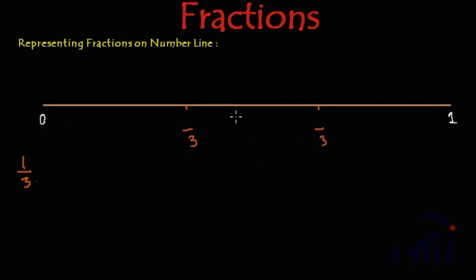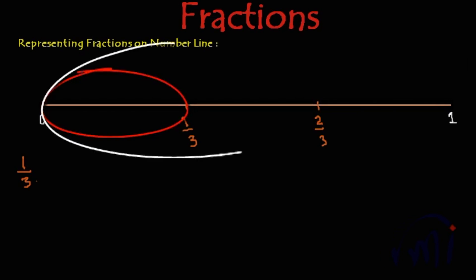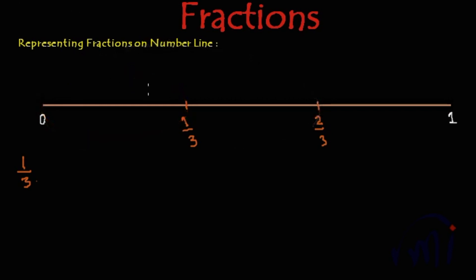After 0 we get 1, so this point will be 1 by 3. And after 1 we get 2, so this point will be 2 by 3. So this much is 1 third and this much is 2 third. This point on the line represents 1 by 3, and this point on the number line represents 2 by 3.